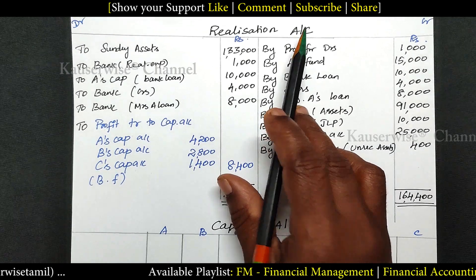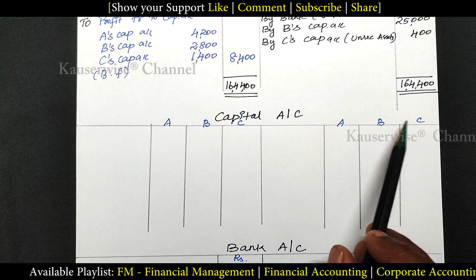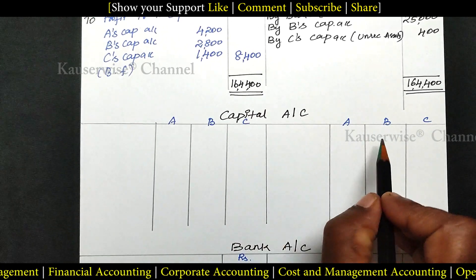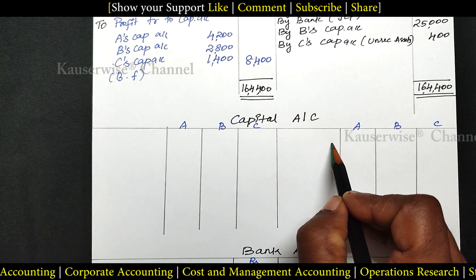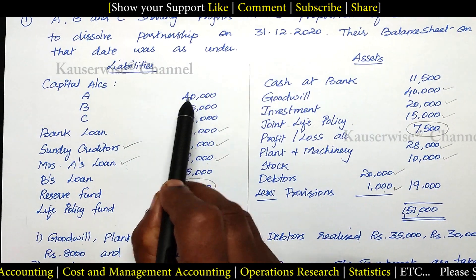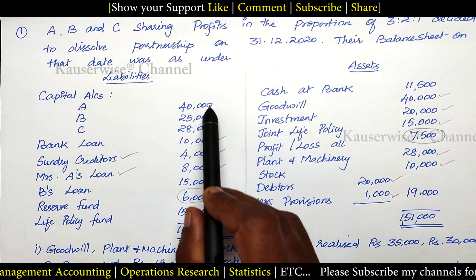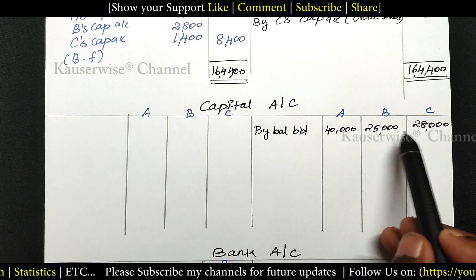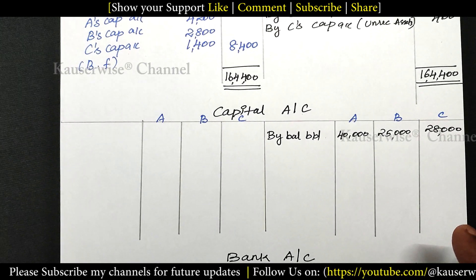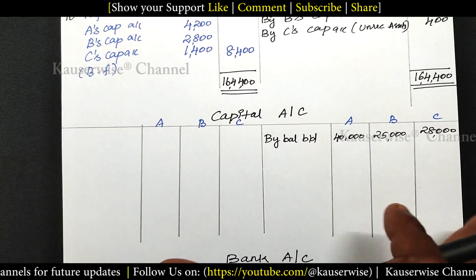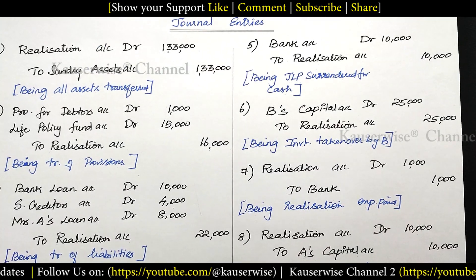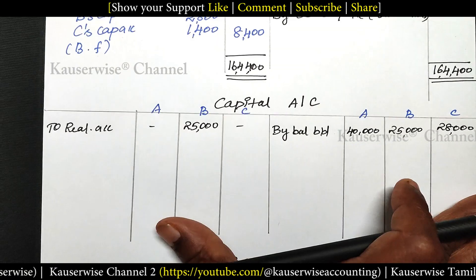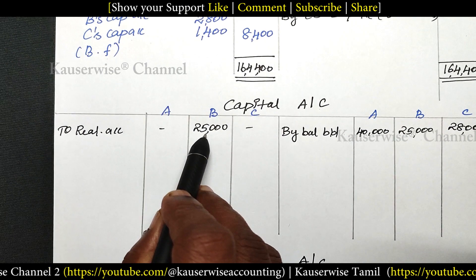After preparing the realization account, we prepare the capital account for all three partners: A, B and C. Start with opening capital — capital is a liability and always shows a credit balance, so enter it as balance brought down. A's capital: 40,000; B's capital: 25,000; C's capital: 28,000. From the sixth journal entry — B's Capital Dr. to Realization — enter realization 25,000 under debit side of B's capital account. From the eighth entry — Realization Dr. to A's Capital — enter 10,000 under A's capital account.